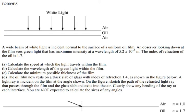This question is from 2009 AP Physics B, and this topic is covered in AP Physics 2 under light waves and optics. A white beam of light is incident normal to the surface of a uniform oil film. An observer looking down at the film sees green light with maximum intensity at a wavelength of 5.2×10⁻⁷ meters. The index of refraction of the oil is 1.7. Calculate the speed at which light travels within the film.